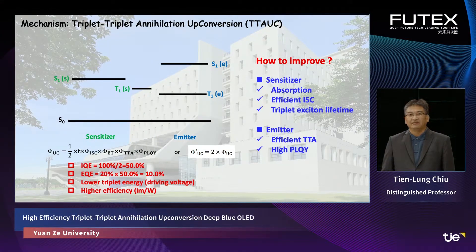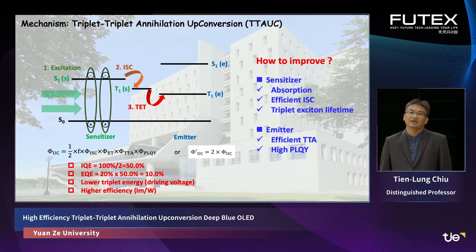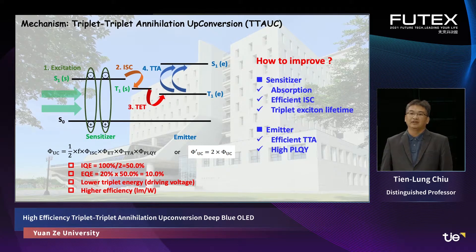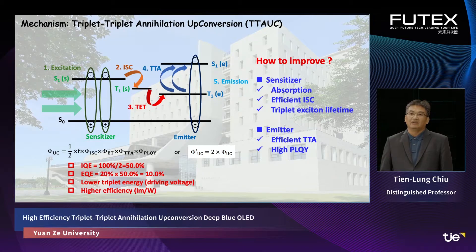For the mechanism of Triplet-Triplet Annihilation, we use the singlet exciton, which undergoes intersystem crossing to the triplet state, then energy transfers to the emitter triplet state. Two triplets recombine to form one singlet, which then produces emission. In this mechanism, we have a long triplet diffusion time, eventually yielding one singlet blue emission.